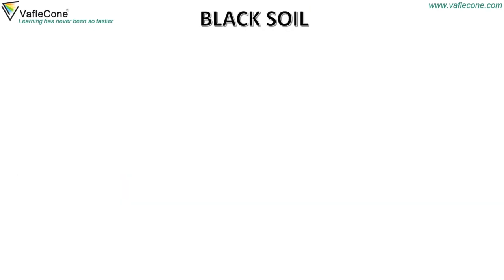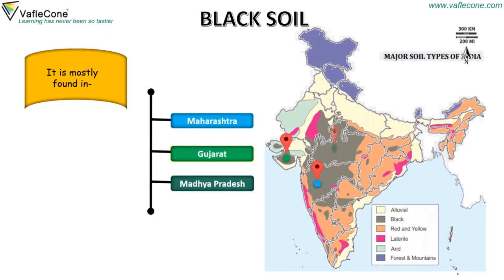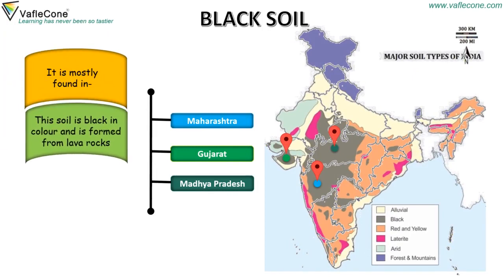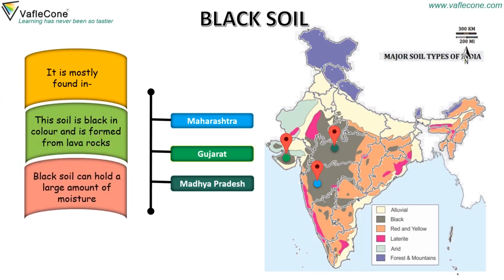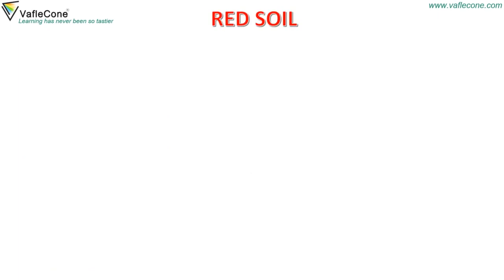Black soil. It is mostly found in Maharashtra, Gujarat and Madhya Pradesh. This soil is black in color and is formed from lava rocks. Black soil can hold a large amount of moisture. Cotton, sugarcane, wheat and oil seeds grow well in this soil.